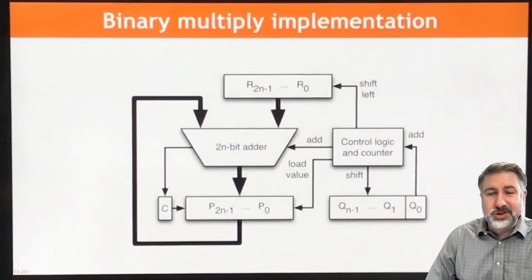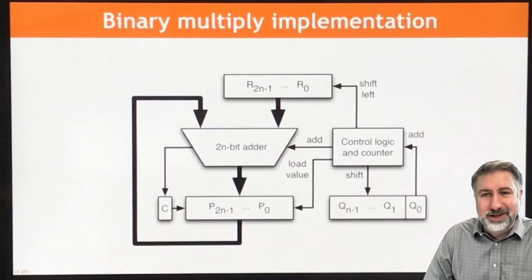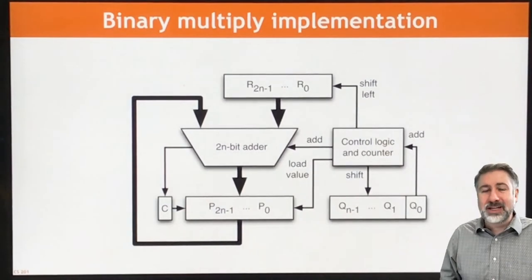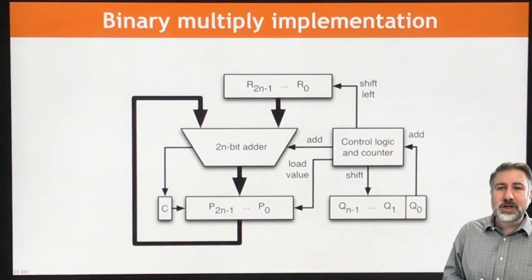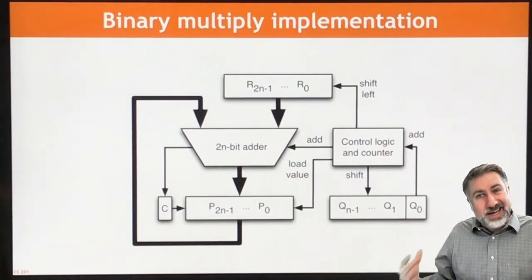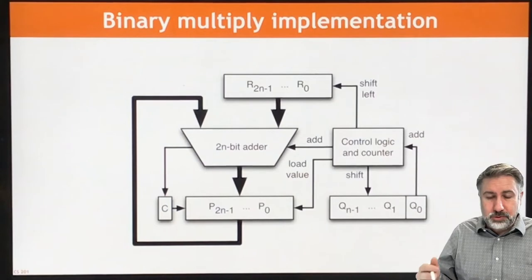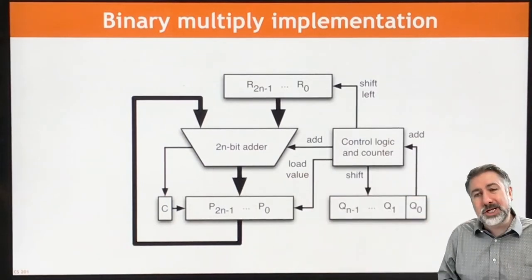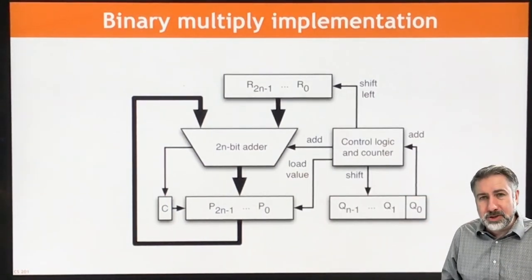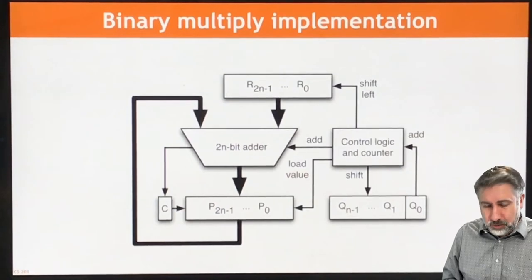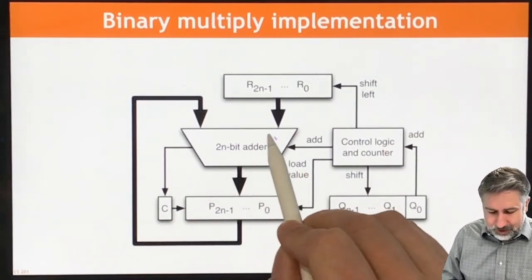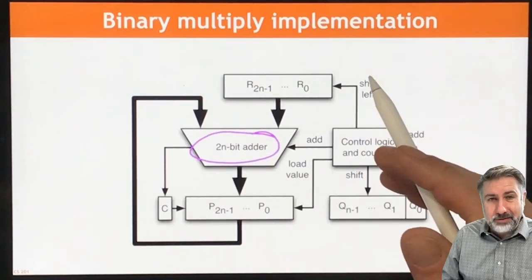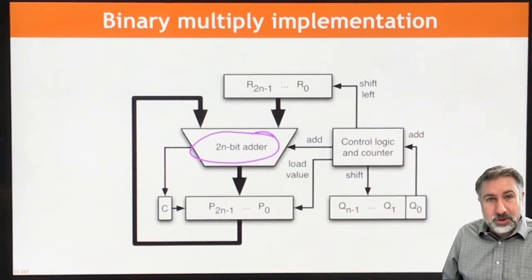This is the device that I dropped down at the end of the last video. It has a lot of moving parts, so I want to walk through those moving parts together and see if we can understand the process and algorithm we're going to use to produce a multiplication result based on numbers that we're going to give. We're going to start with the adder that's in the middle here. This adder is going to take two numbers together and add the results.